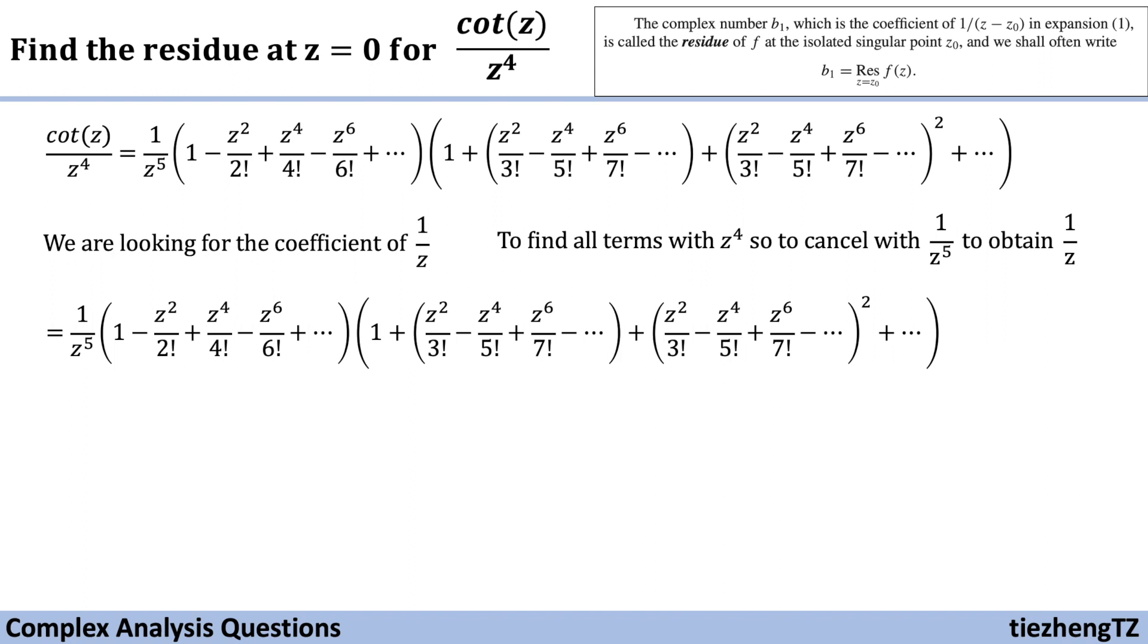First, let's take a look. From the first parenthesis, if we have 1, so we need to find all terms in the second parenthesis with z to the power of 4. After a careful check, we can have that the first is minus z to the power of 4, and we can also find z squared over 3 factorial square. There is another z to the power of 4. And that's it.